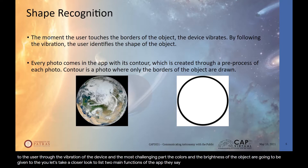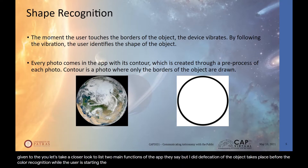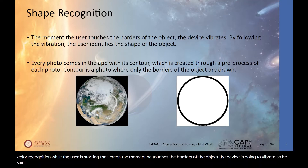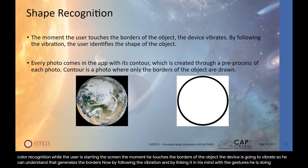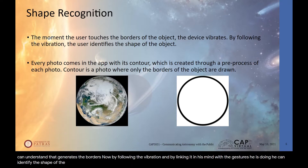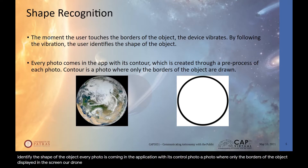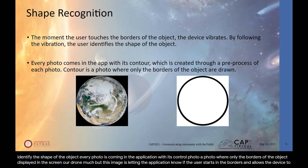The shape identification of the object takes place before the color recognition. While the user is touching the screen, the moment they touch the borders of the object, the device vibrates so they can understand they've reached the borders. By following the vibration and linking it in their mind with the gestures they are making, they can identify the shape of the object. Every photo comes with a contour photo — an image where only the borders of the displayed object are drawn — which the user cannot see, but which lets the application know when the user is touching the borders.